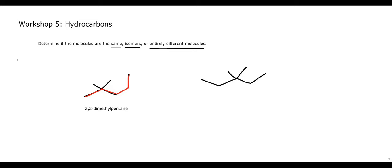Looking at the molecule on the right, we draw the longest parent chain: one, two, three, four, five. And we have two methyl groups on the third carbon. So that's going to be 3,3-dimethylpentane. We have 2,2-dimethylpentane and 3,3-dimethylpentane — those two methyl groups are shifting from the second carbon over to the third.